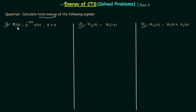Let's move to signal number 1, which is x1(t). It is equal to e raised to the power minus at, multiplied by u(t), where a is greater than 0. Based on this value of a, we have three different cases: a greater than 0, a less than 0, and a equal to 0.